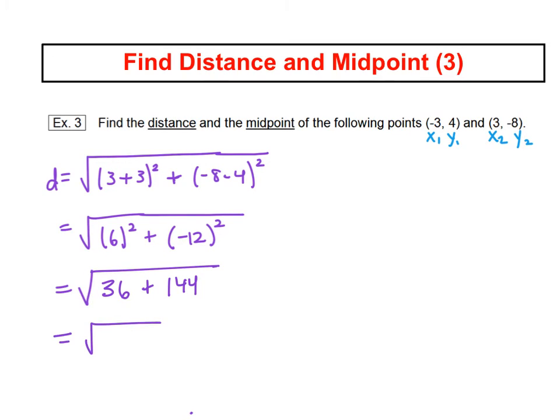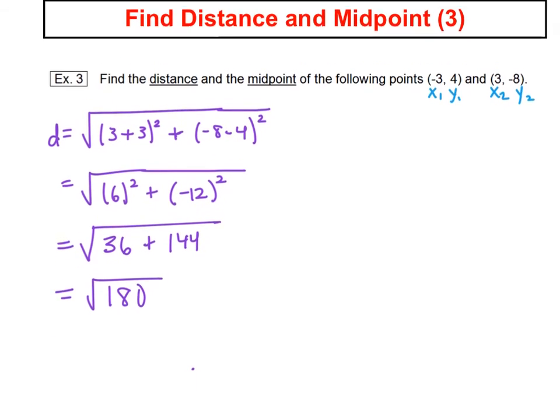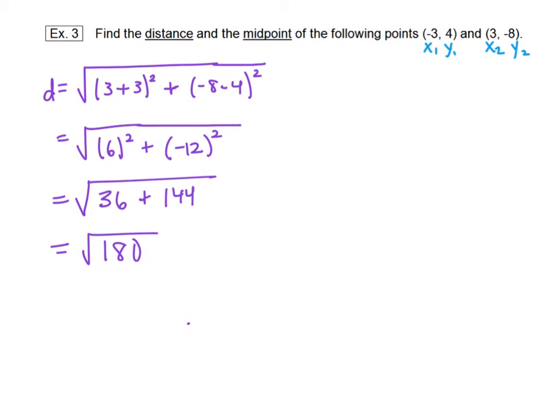36 plus 144 is 180, and then we're going to try to see if we can simplify the square root of 180. So do any of those perfect square numbers fit into 180?